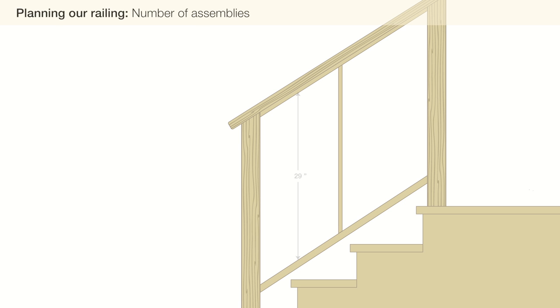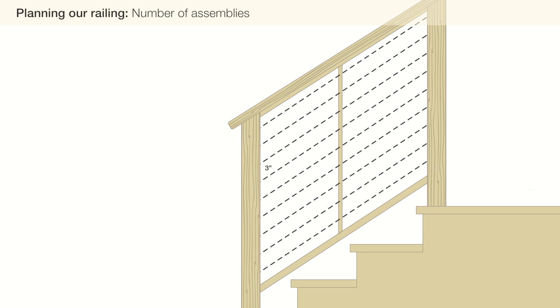To calculate the number of assemblies required, we need to find the height of the railing frame opening. Measure the distance from the bottom of the cap rail to the top of the foot rail. We recommend spacing the cables no more than 3 inches apart. We will need a total of 9 cable rail assemblies.